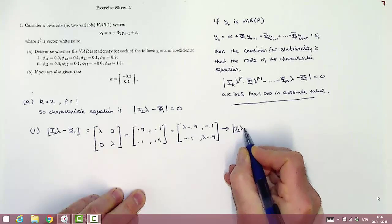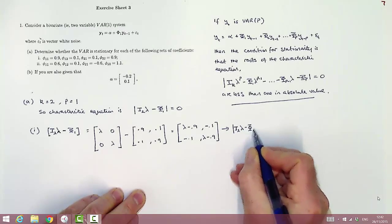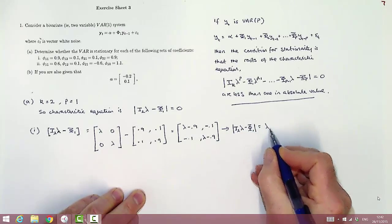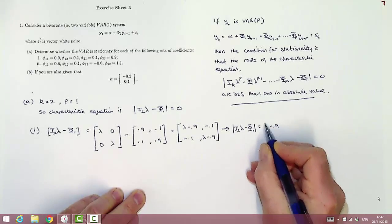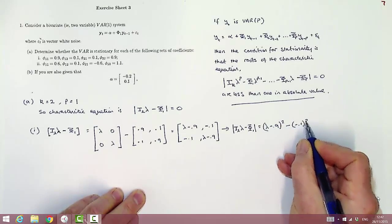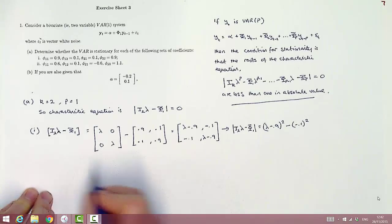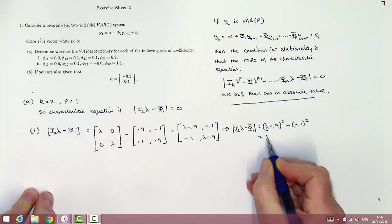And then using the formula for the determinant of a 2 by 2 matrix, we get that the characteristic equation, the determinant or part of the characteristic equation is lambda minus 0.9 squared minus minus 0.1 squared.